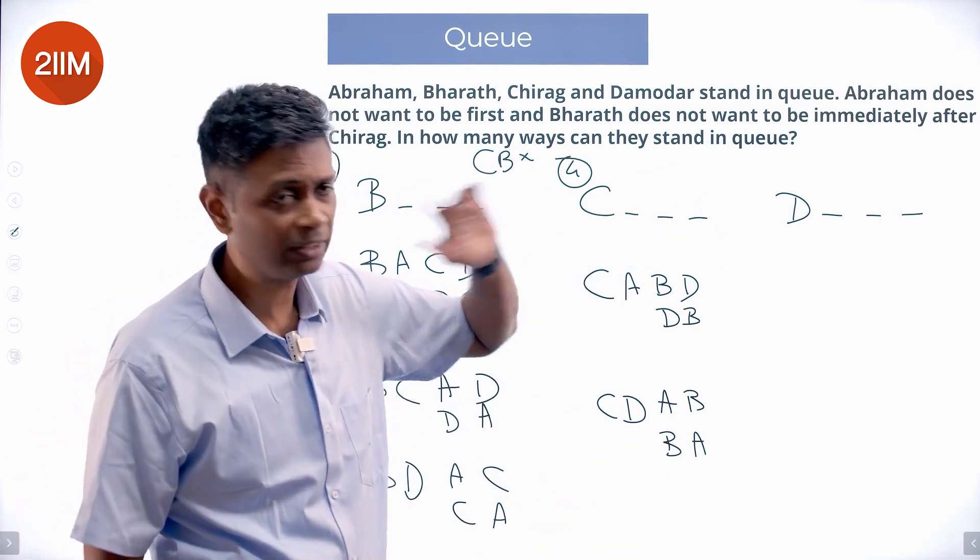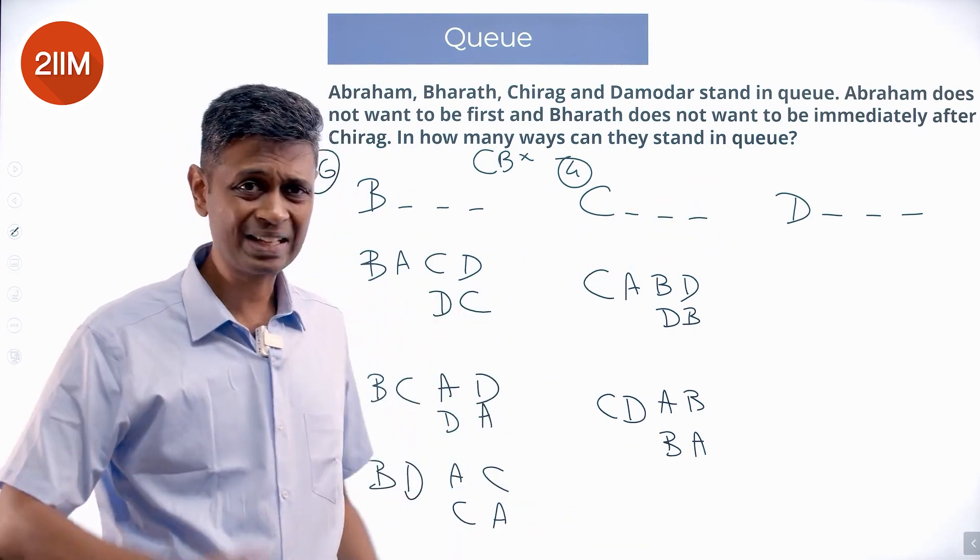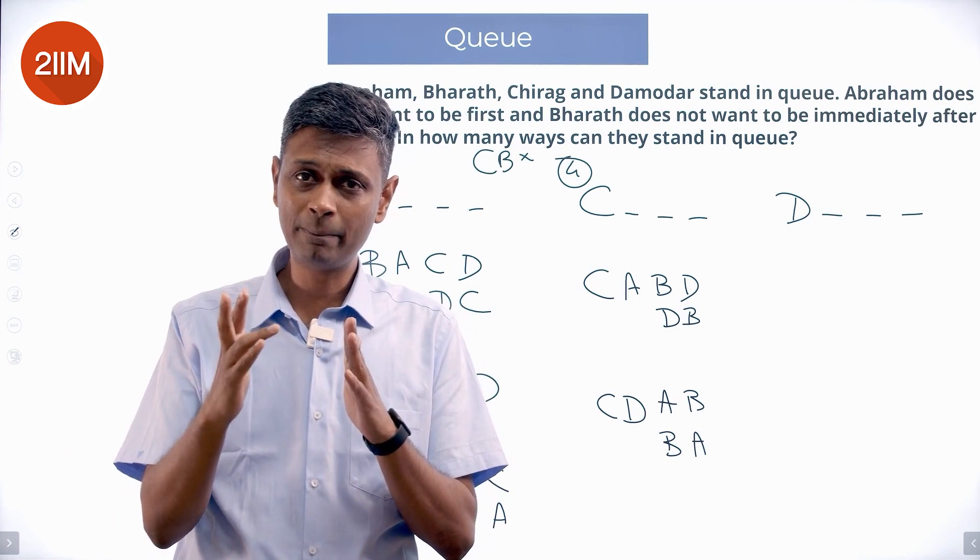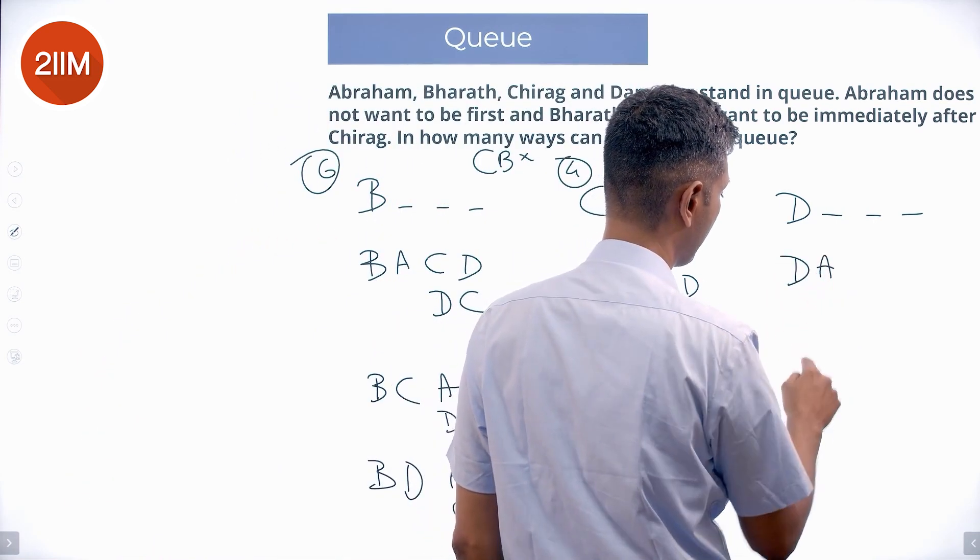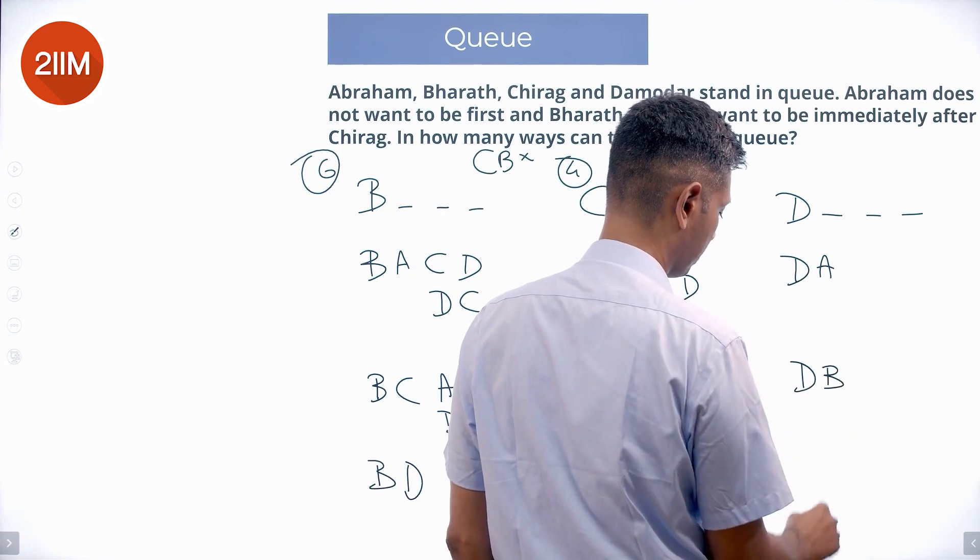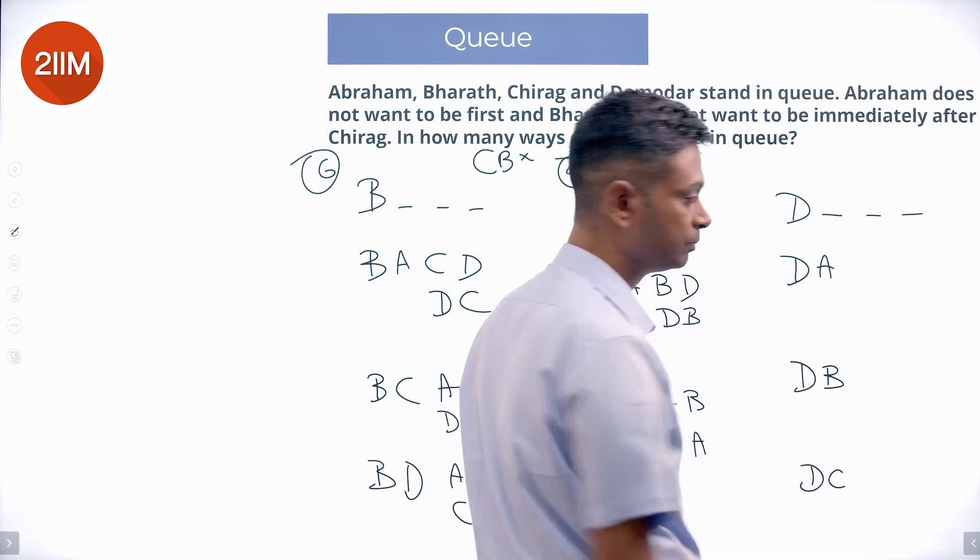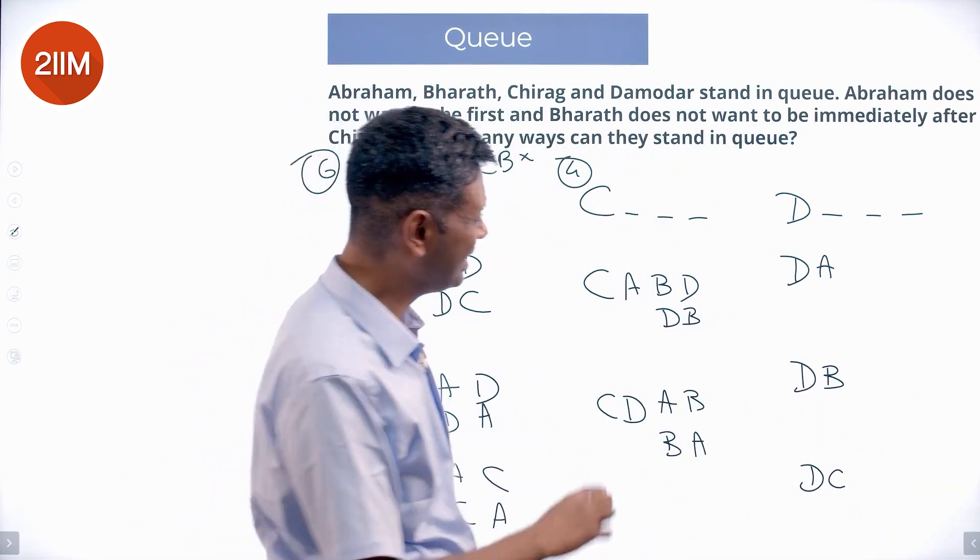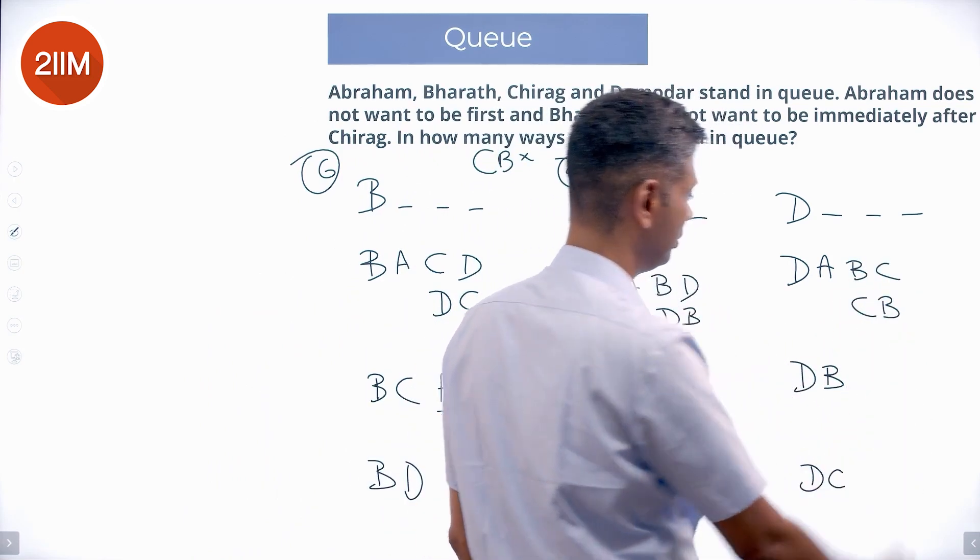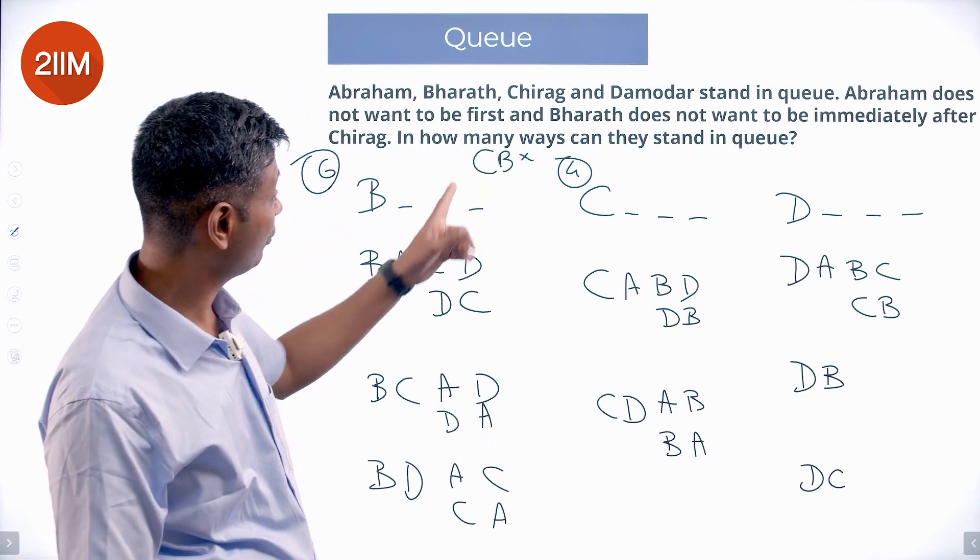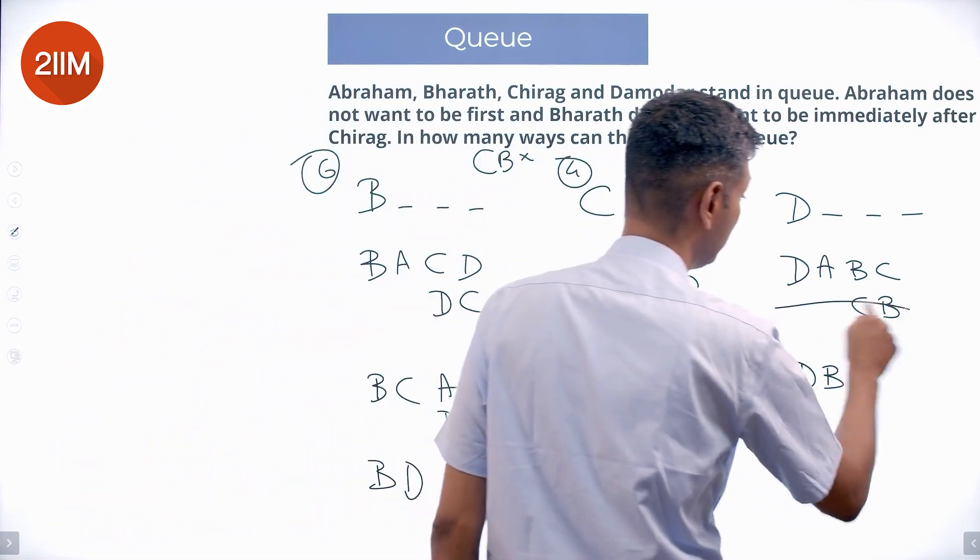Now what do we do? Now we go to D. The first one is D, second could be A, B or C. I will put all. I could have D A, D B, D C. Starting with D A, I could have D A B C, D A C B, but hey I cannot have C B, so this D A C B is ruled out.